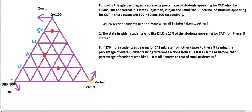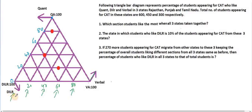Similarly, let's read for verbal. Verbal is going in this direction. I'll change the color of the marker so that you can read. So verbal is going like this — these lines are represented by verbal. Here it is 100, and again the same thing: gap of 20. So this is 80, this complete line is 60, this is 40, this is 20, and this point is zero.